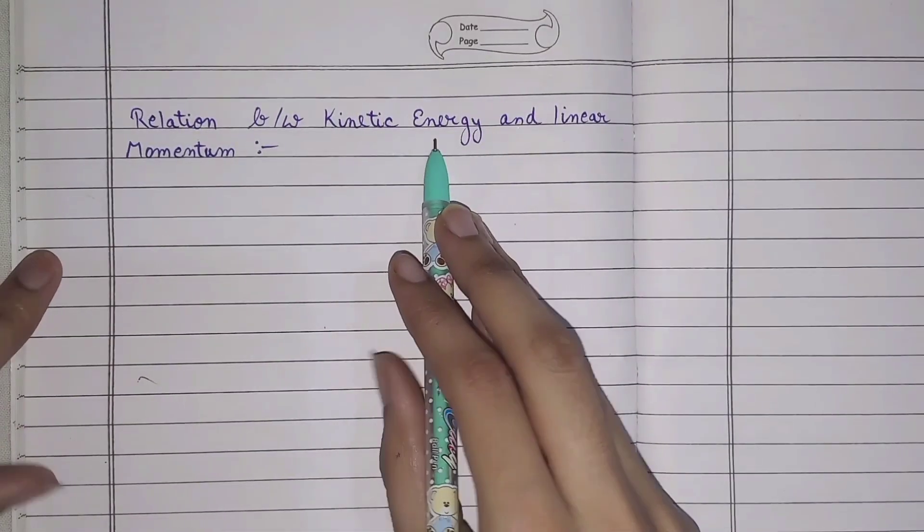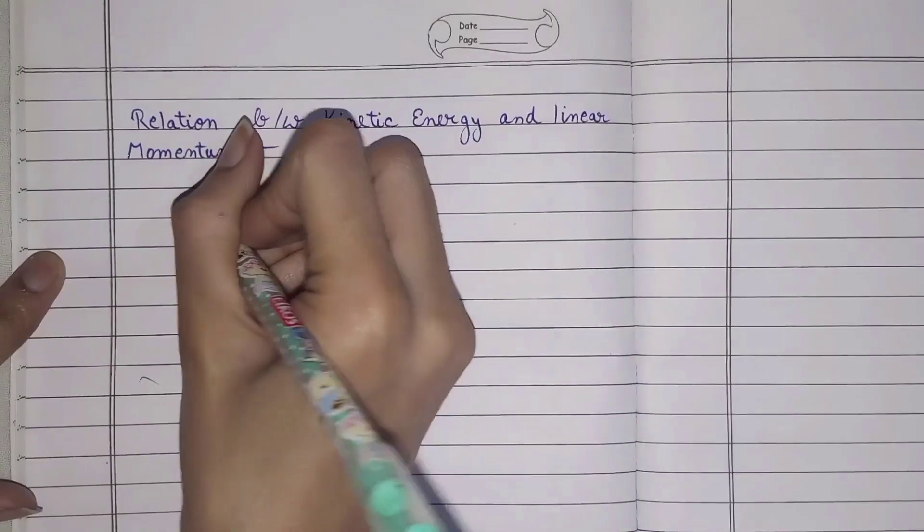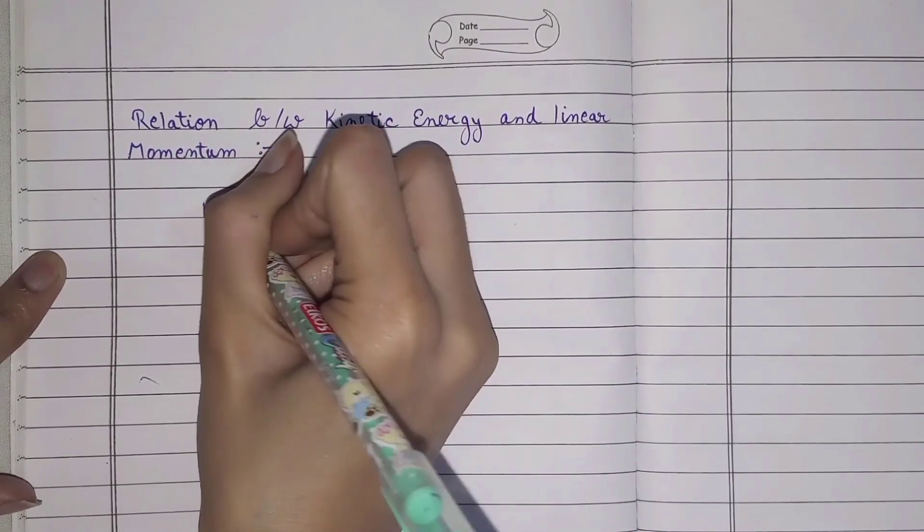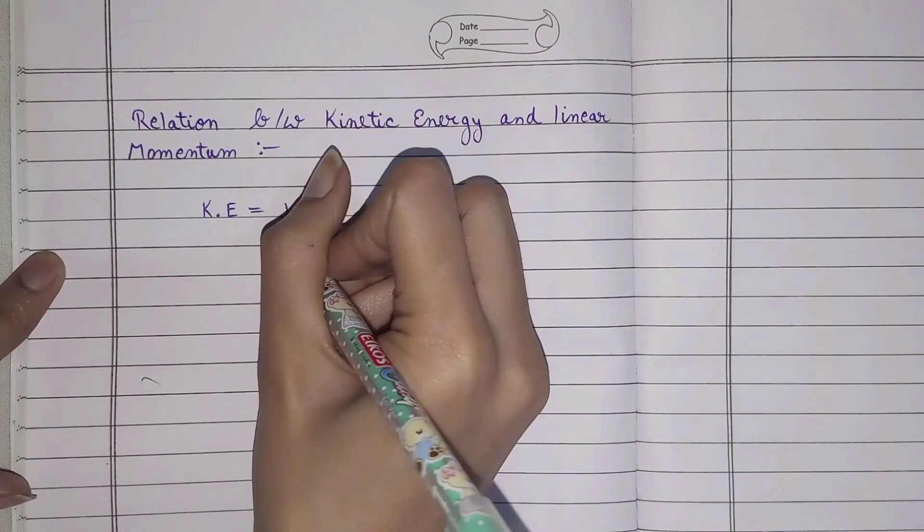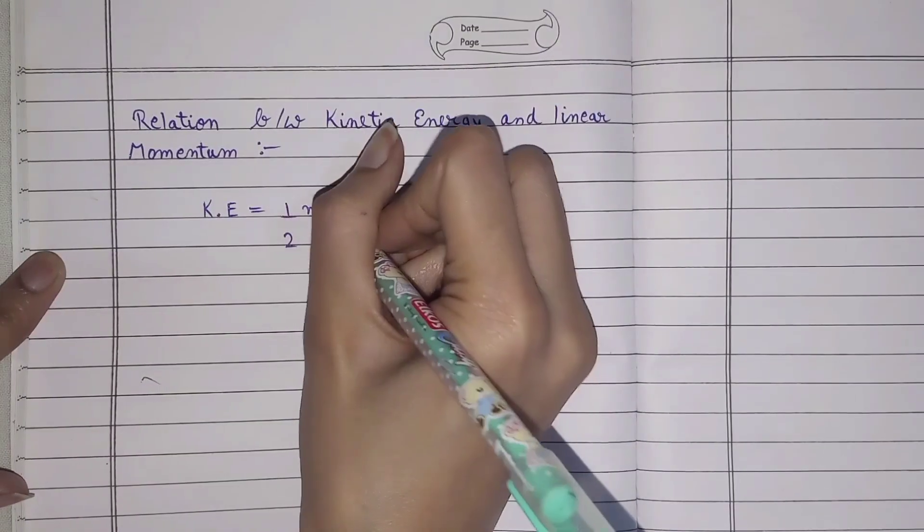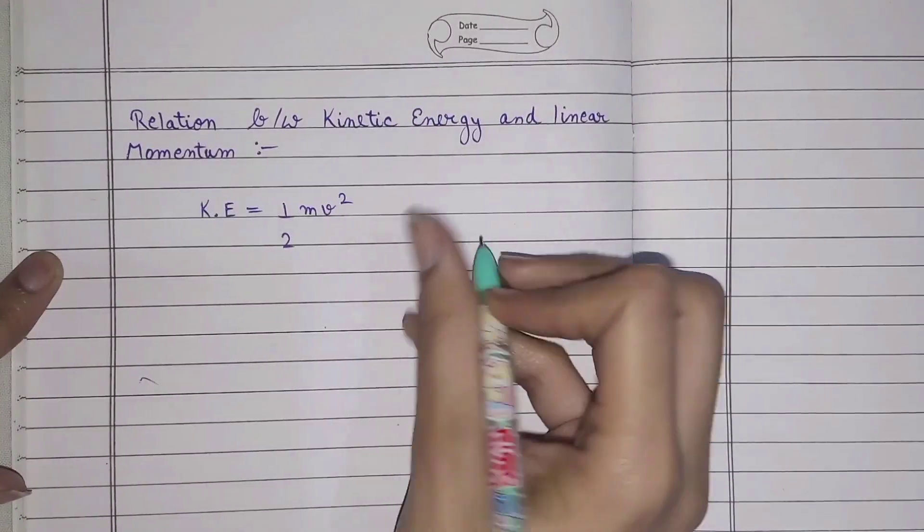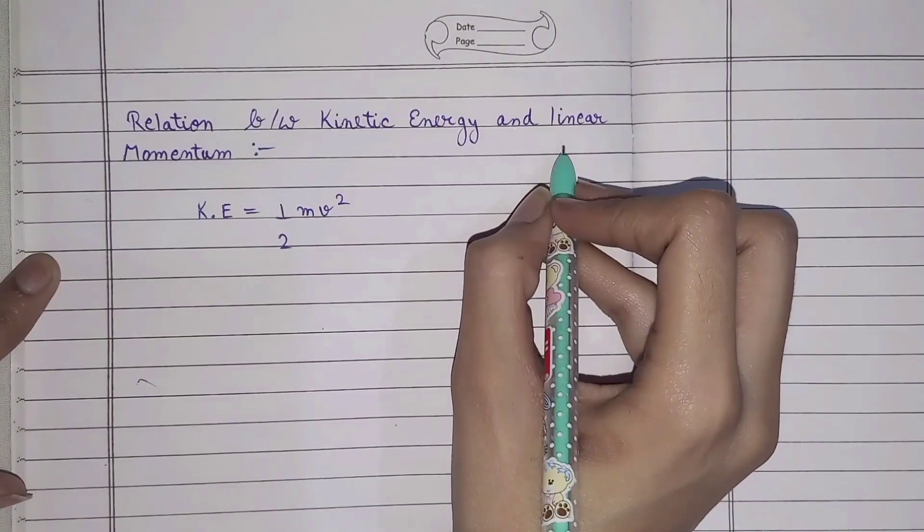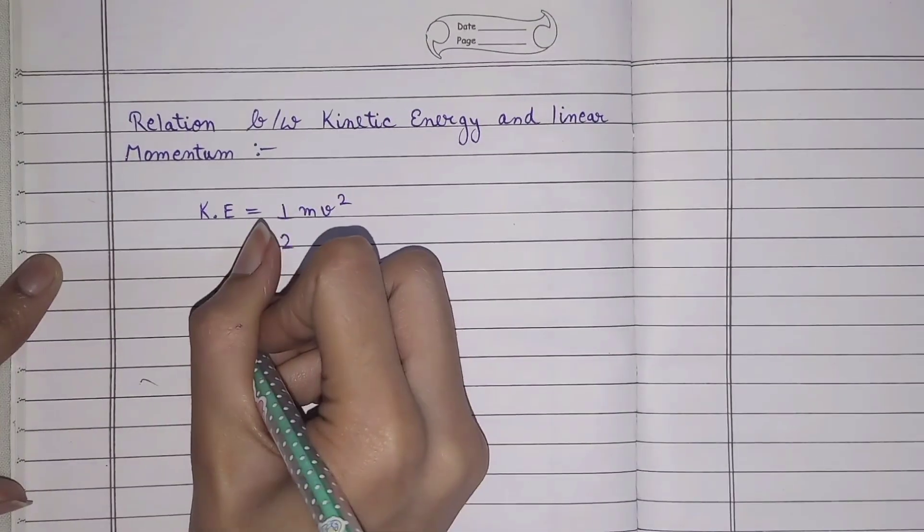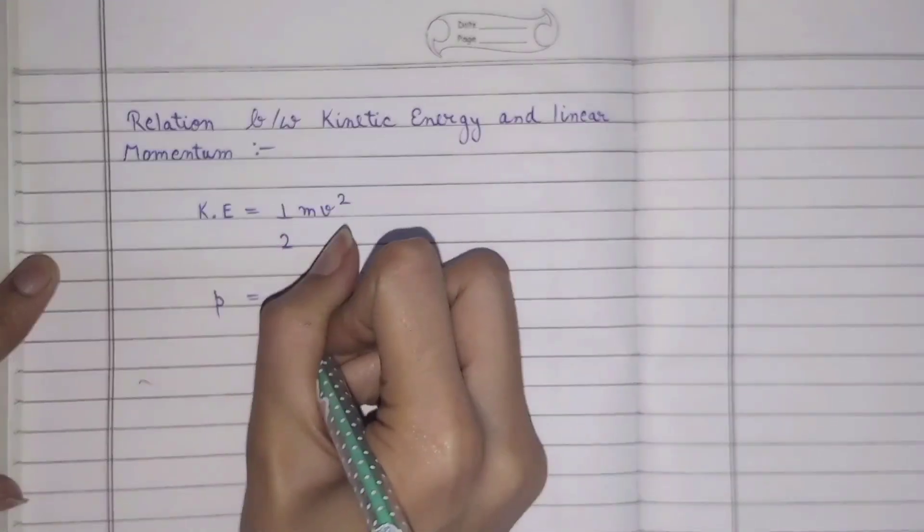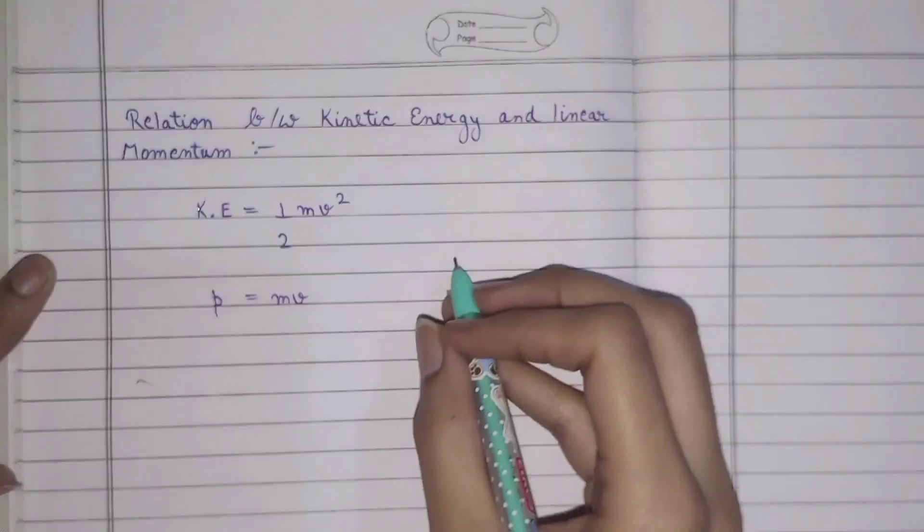First of all, we all know about the formula of kinetic energy, and that is KE = 1/2 mv². And the formula for linear momentum is p = mv.